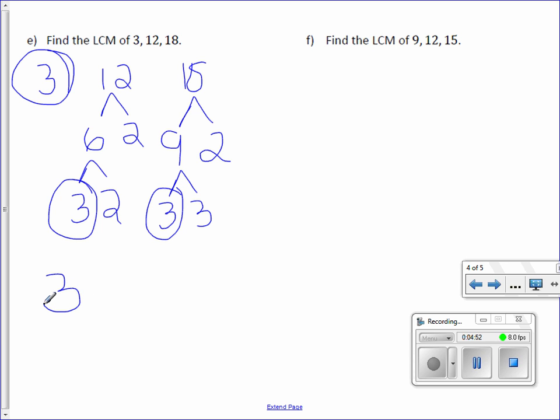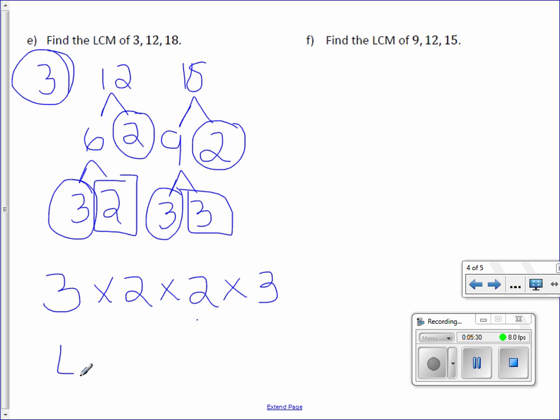And what we need to do when we have 3 numbers is we also need to find if 2 numbers have anything in common. So for example, both 12 and 18 have a 2 in common. 2 times 3 times 2 times 3, which is 12 times 3 is 36. So the LCM is 36.